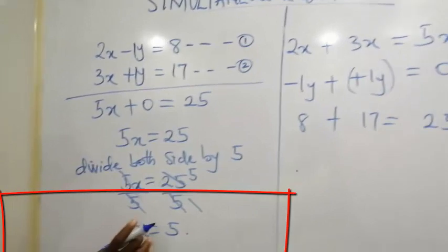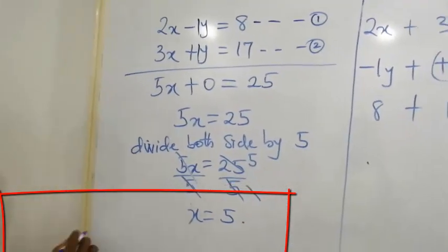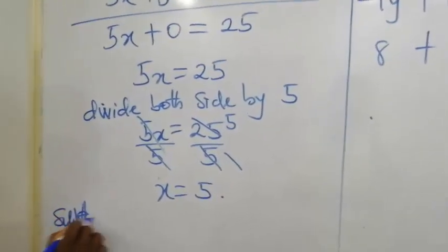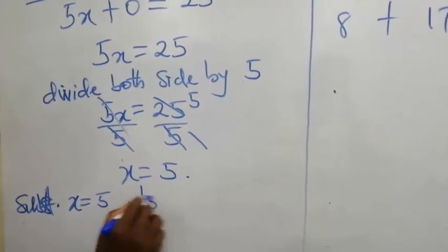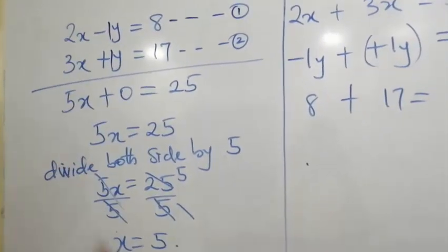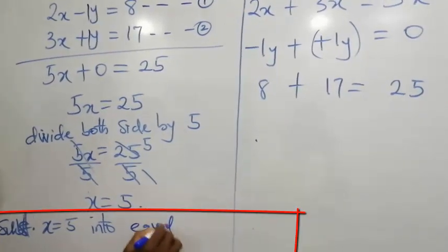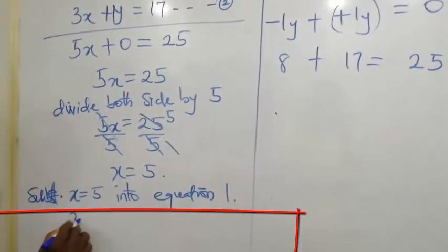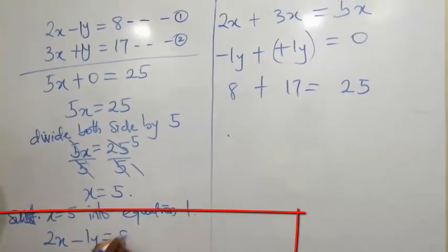So, that is the value of the first variable, which is variable x. So, to get the variable y, we substitute x equals to 5 into any of the equation, into any of equation 1 or 2. Let us substitute x equals to 5 into equation 1. And the equation 1 is 2x minus 1y equals to 8.